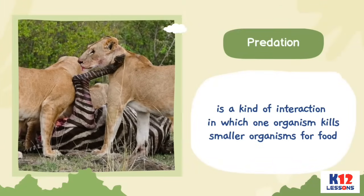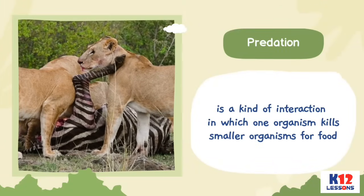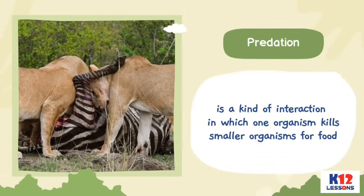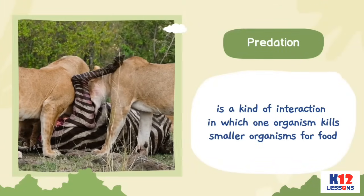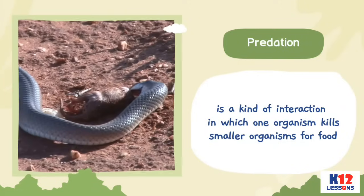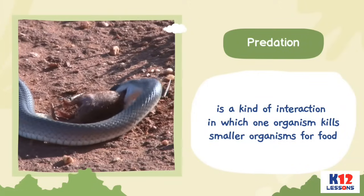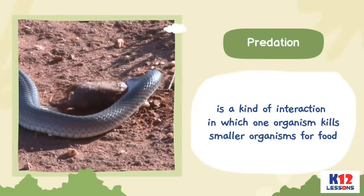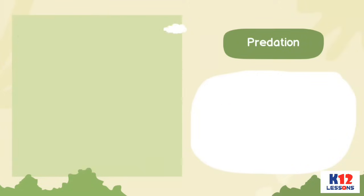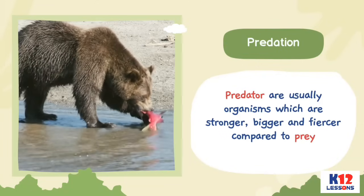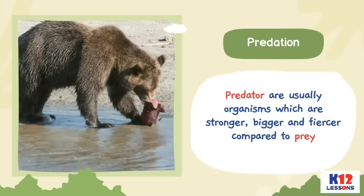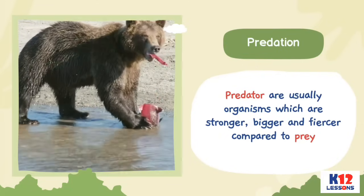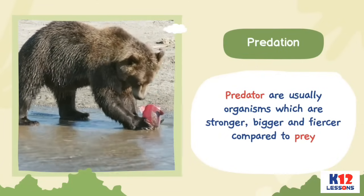Predation is a kind of interaction in which one organism kills smaller organisms for food. An example is when a snake eats a rat for food. Predators are usually organisms which are stronger, bigger, and fiercer compared to their prey.